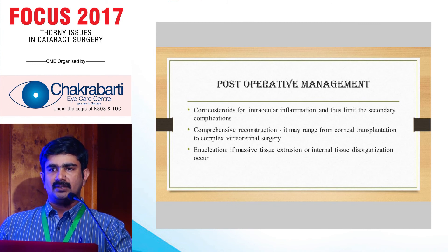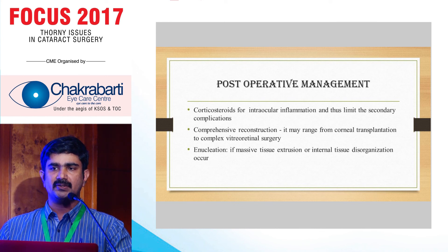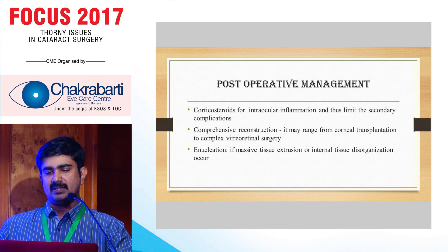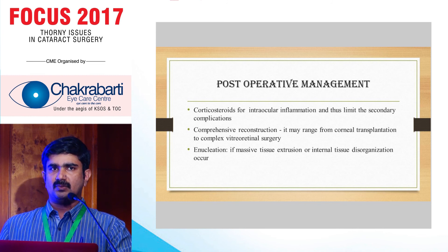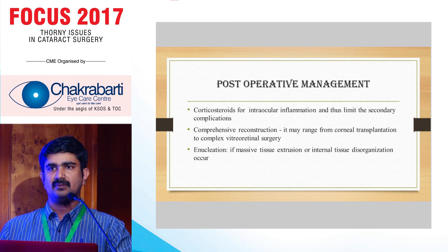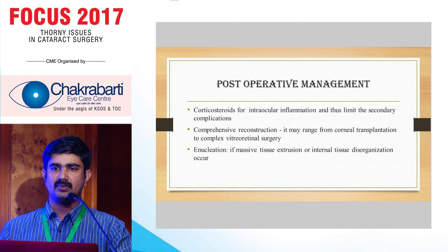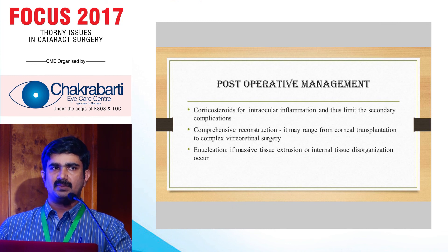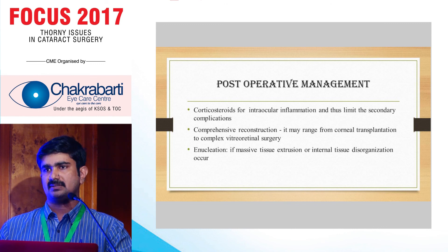In the second technique, a 25-gauge trocar cannula is used 4mm from the limbus, partially inserted — penetrating only the sclera and going into the suprachoroidal space — which drains a large amount of blood. If the suprachoroidal hemorrhage is well-liquefied, a limbal incision using a trocar cannula is sufficient. If large clots are suspected, a trapdoor incision at the highest point is preferred, and a blunt instrument or cotton-tipped applicator may be used to remove clots from the wound. These drainage wounds do not need to be sutured.